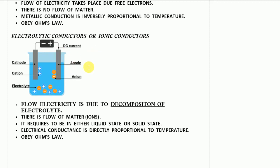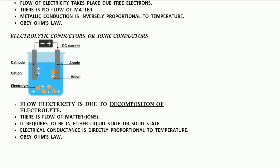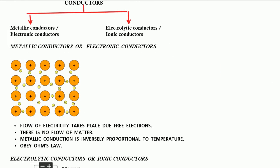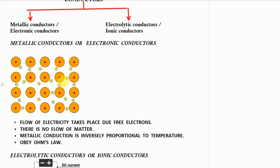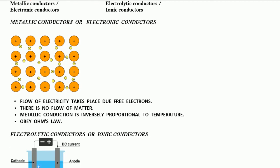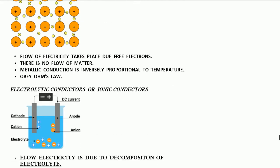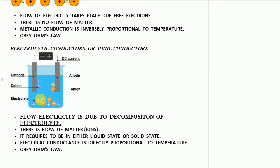As dissociation of ions takes place, the flow of electricity in electrolytic or ionic conductors is due to the decomposition of the electrolyte into positive and negative ions — there is a flow of matter, meaning the ions themselves are moving. This is different from metallic conductors, where the positive metal ions stay in position and only electrons move; here the atoms themselves — Na⁺ and Cl⁻ — are moving.